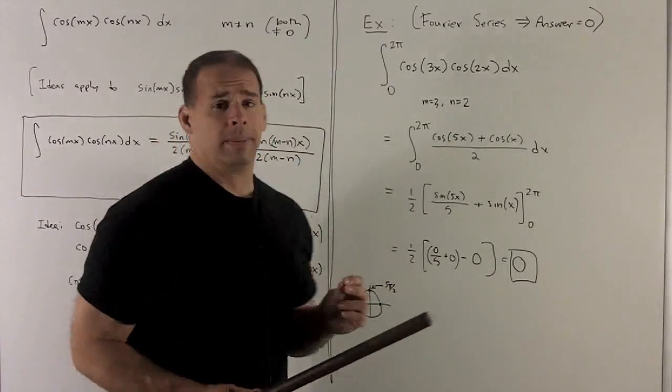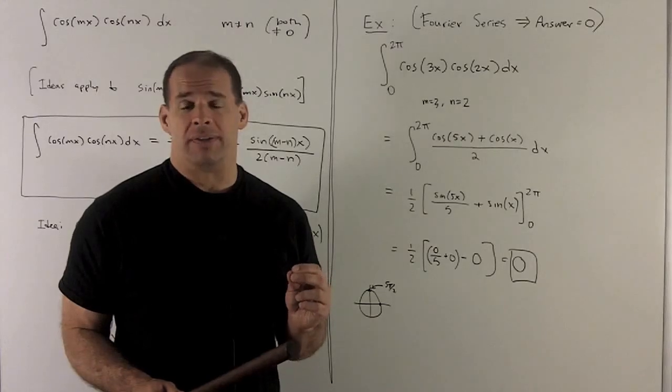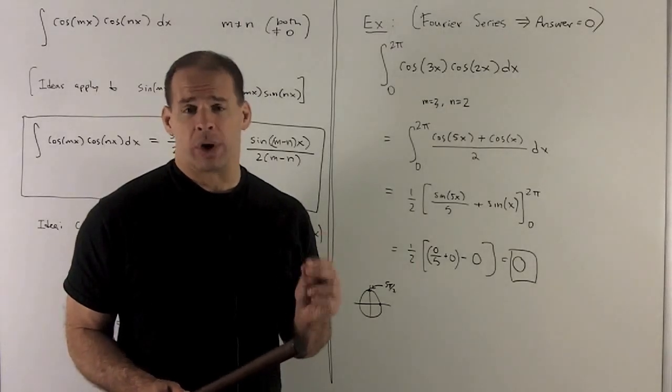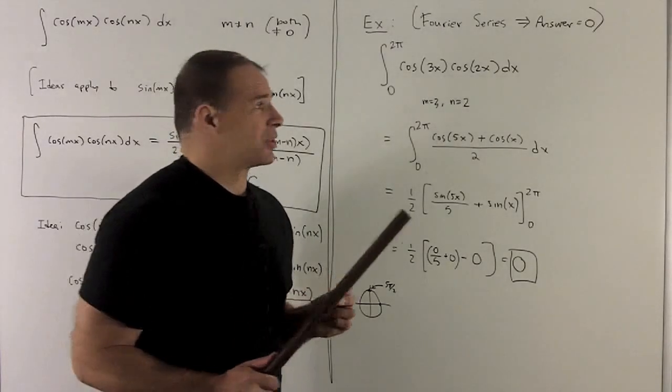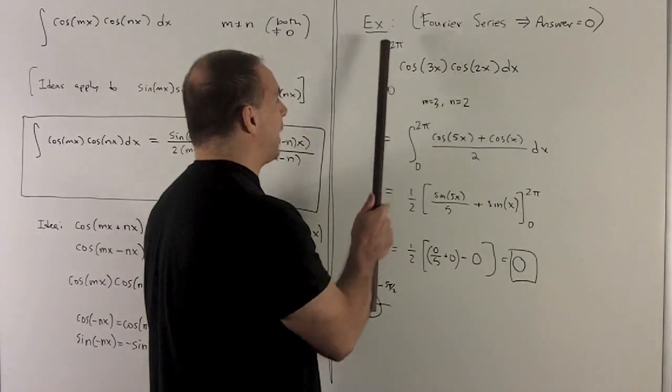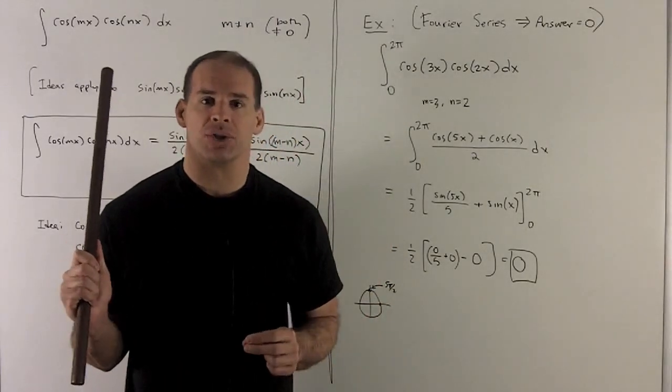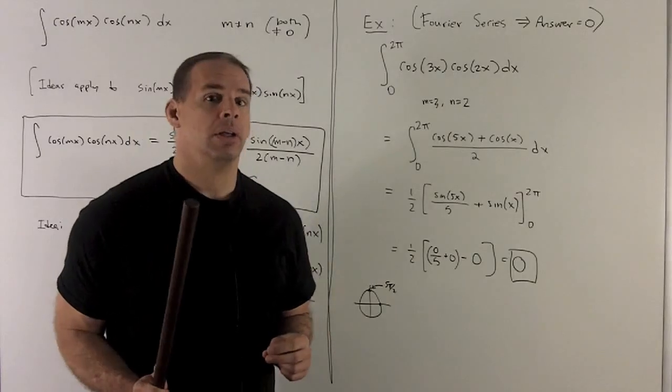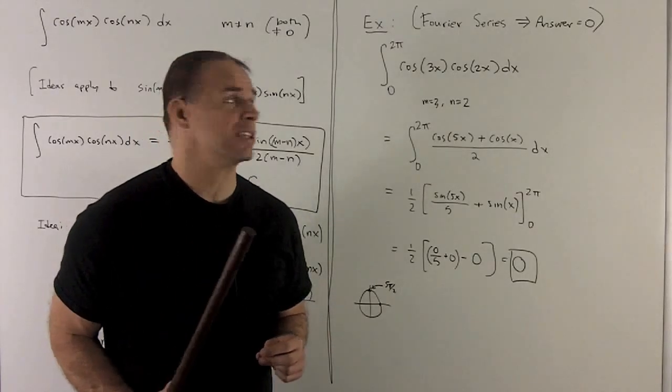So, as I mentioned before, this is going to apply later on. If you ever take a course on Fourier analysis, the idea is going to be, if I take the integral from 0 to 2 pi of one of these types of integrals, we'll want it to be 0. So let's check that in just one case.